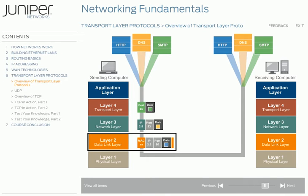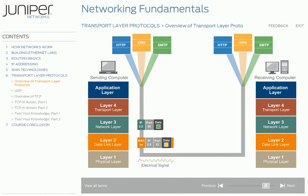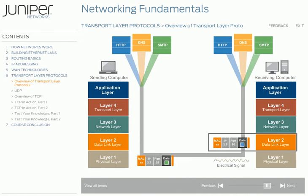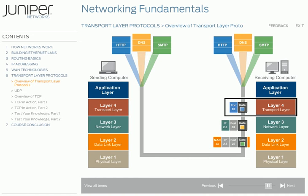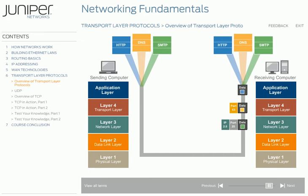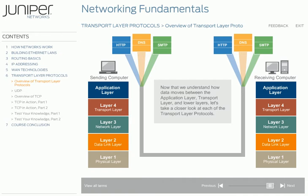The transport layer allows multiple application layer protocols to share a single IP interface or IP address. At the physical layer, each frame is converted to an electrical signal and transmitted. Each of these frames is going to the same computer, but ultimately each is going to a different application layer protocol. On the receiving device, the process is reversed: the data link layer strips off the layer 2 frame and sends the IP packet to the IP interface where the layer 3 header is removed. The network layer sends the datagram to the appropriate transport layer protocol, which examines the destination port number, removes the header, and sends the data to the correct application layer protocol. The single data stream is then demultiplexed into multiple streams going to the appropriate application layer protocols. Now let's take a closer look at each transport layer protocol, starting with UDP.